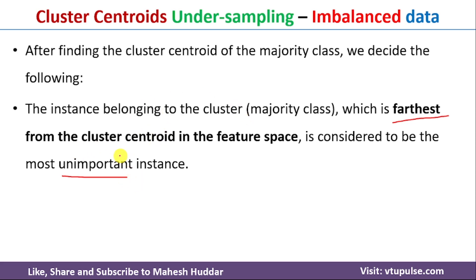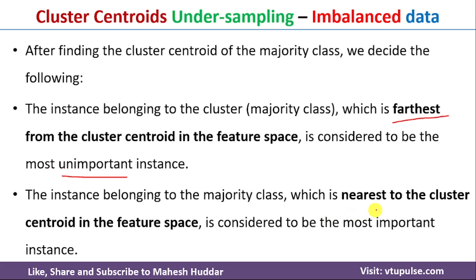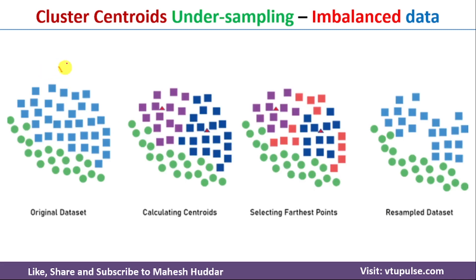If a particular instance is very near to the centroid, such an instance is called an important instance, because it is near to the centroid and will be important for that particular dataset. This can be shown visually. In this case, the original dataset contains two classes: one represented in blue and another in green. Blue is the majority class and green is the minority class. We do not touch the minority class; from the majority class we remove samples so that the dataset becomes balanced.